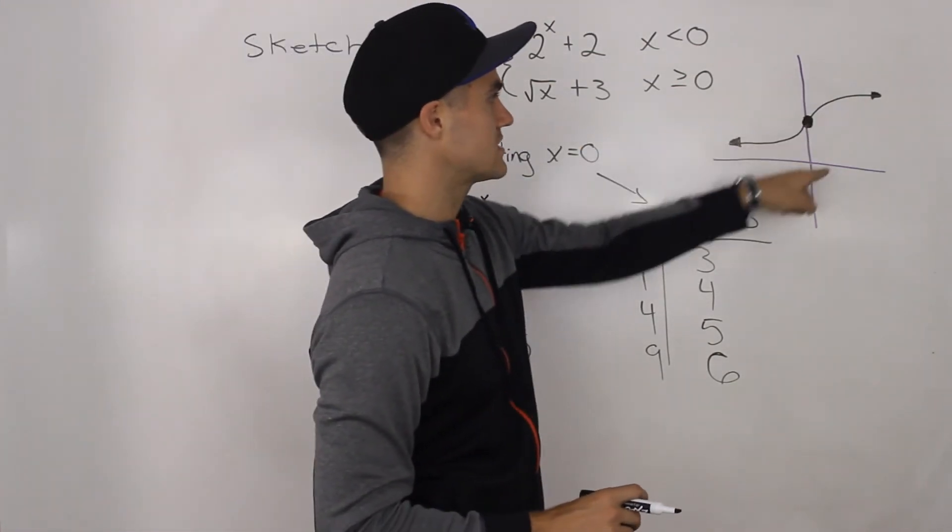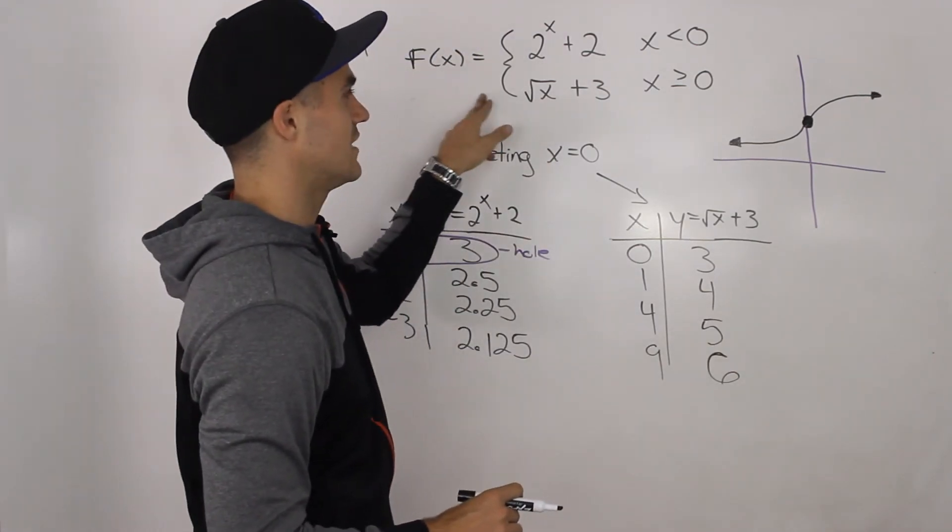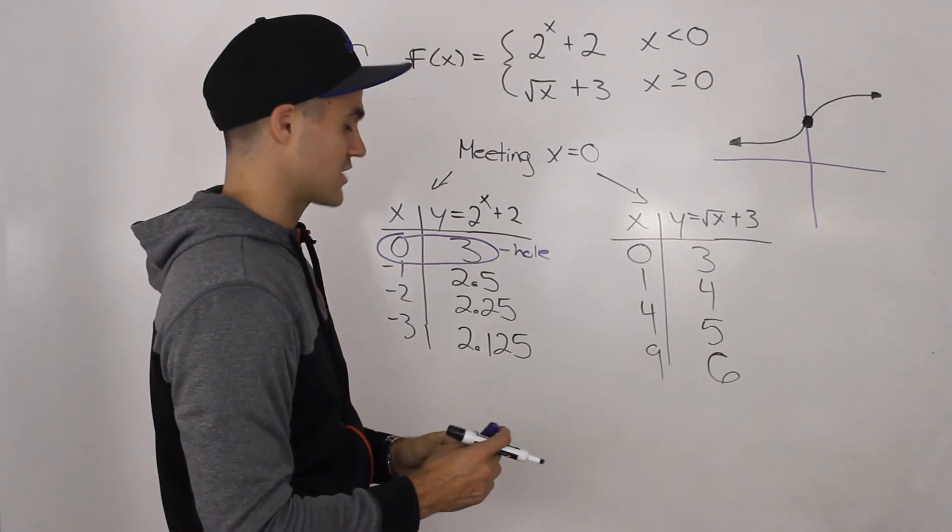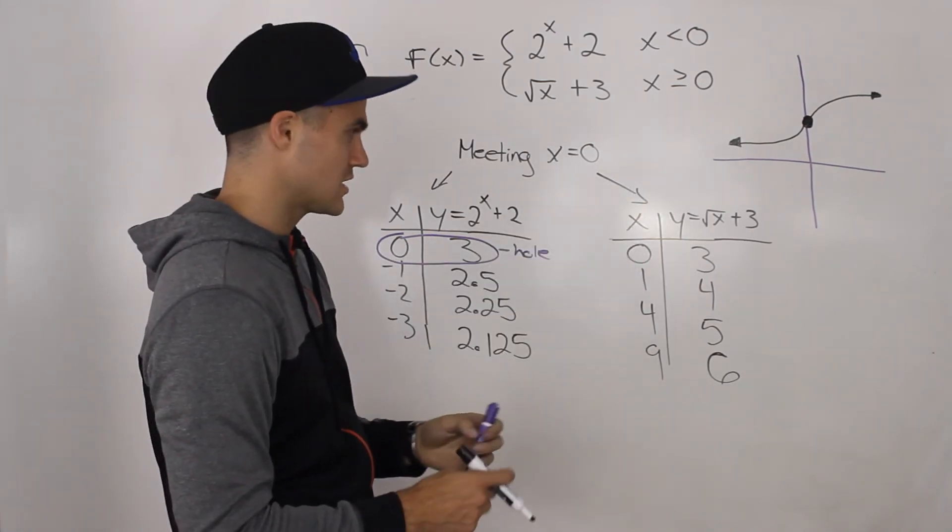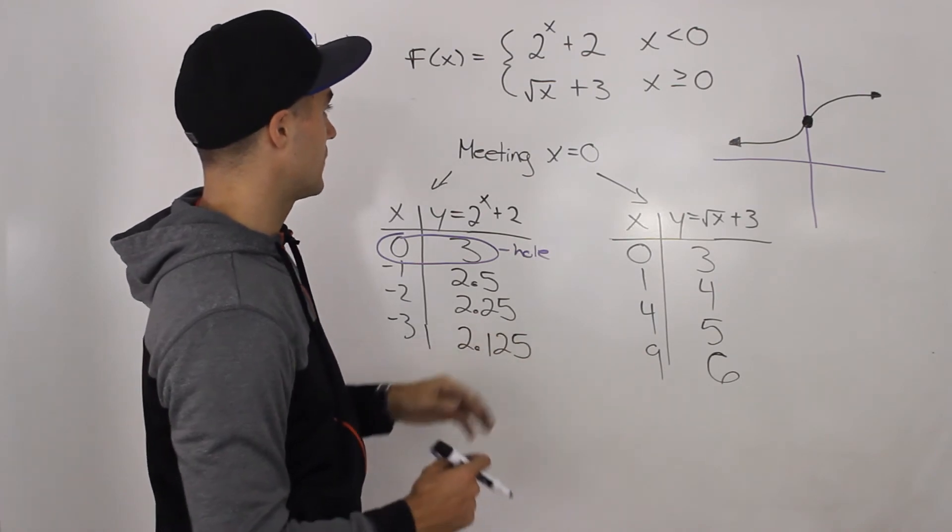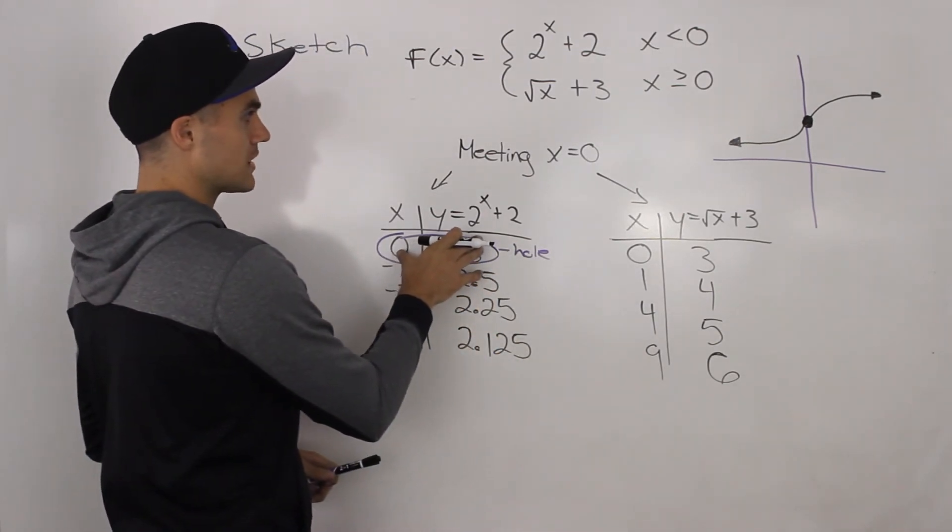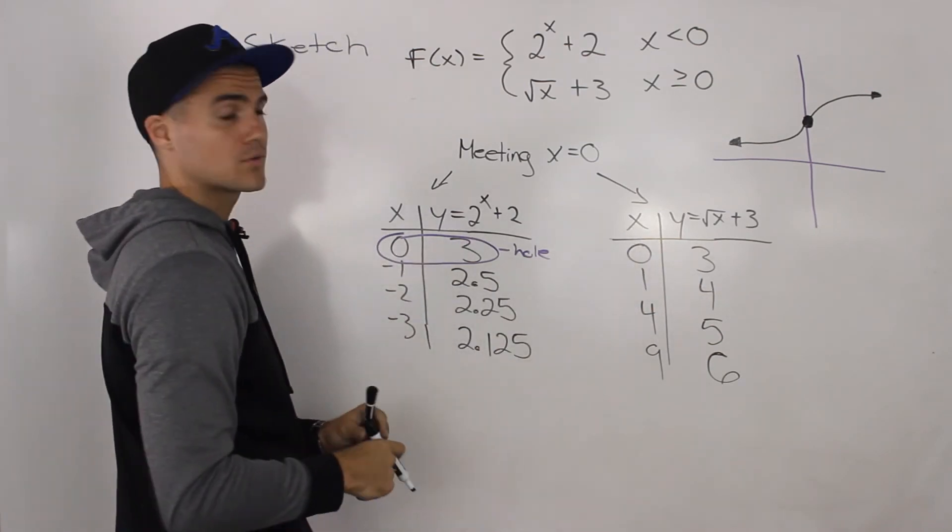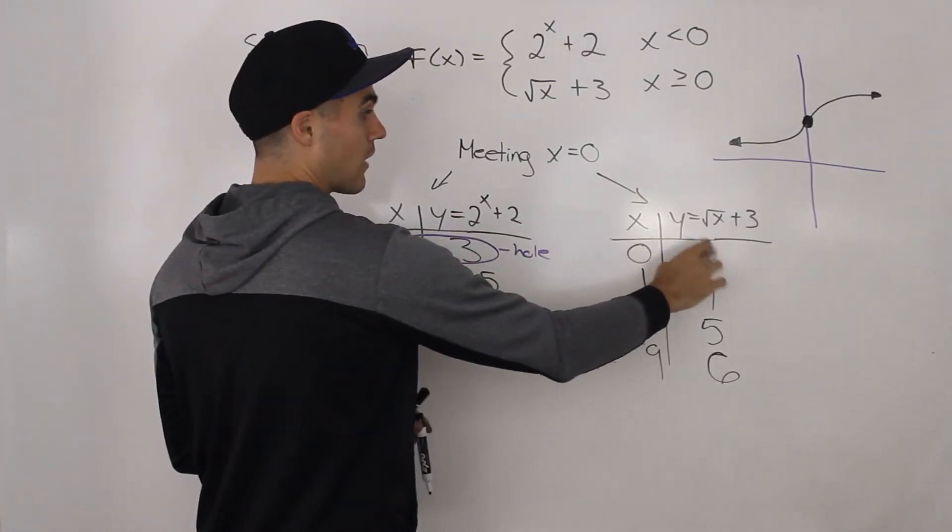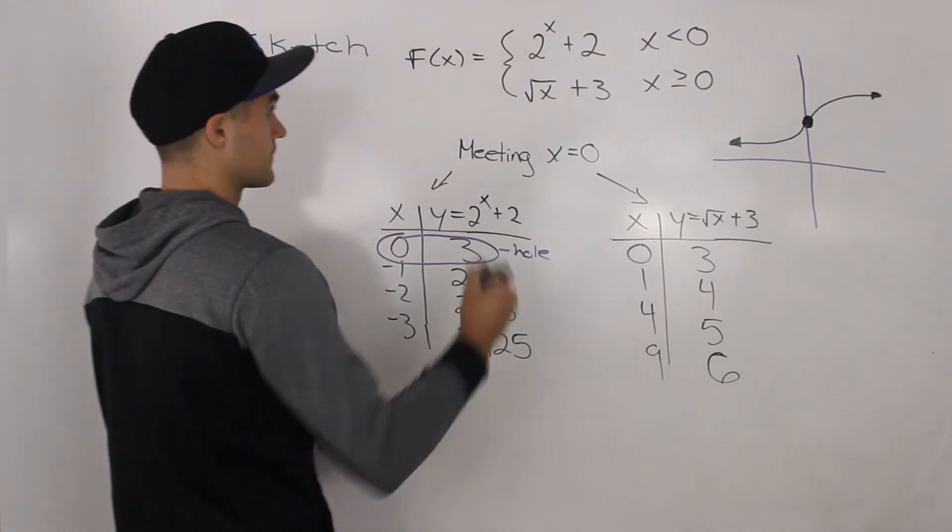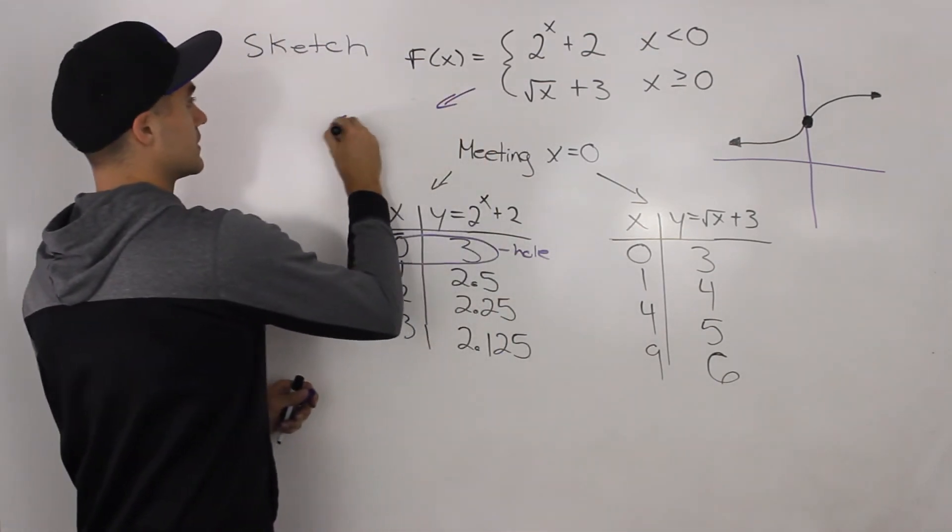That's how this piecewise function will look. And I just said by accident, actually, that this function is continuous. And it is continuous because both of these meeting points at x is equal to zero have the same y value. And for this leg, that y value is defined. So this function is continuous.